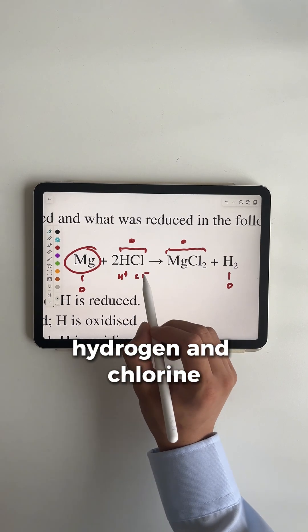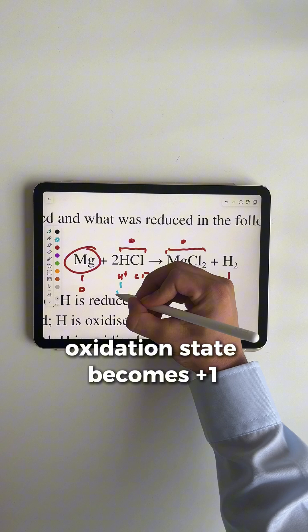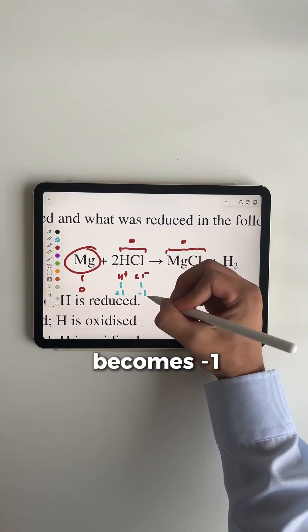The rules are for hydrogen and chlorine when they become ionized. For hydrogen, the oxidation state becomes +1. For chlorine, the oxidation state becomes -1.